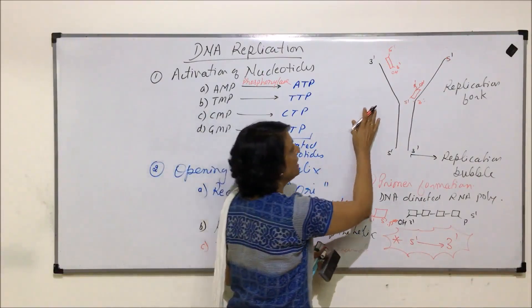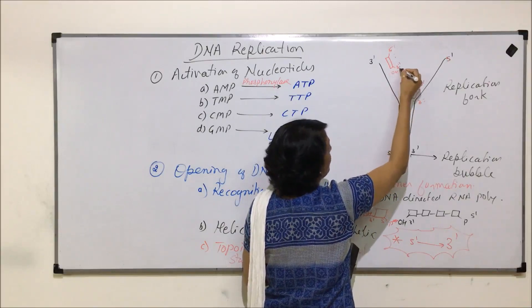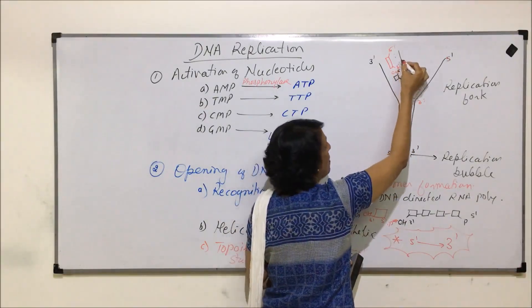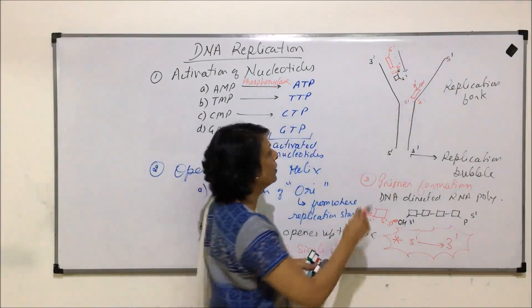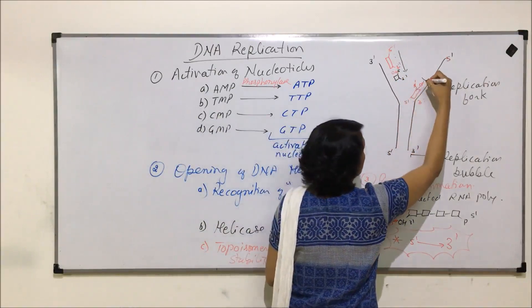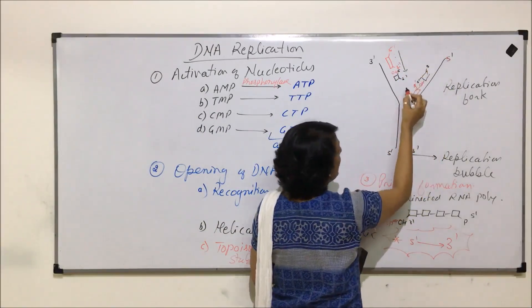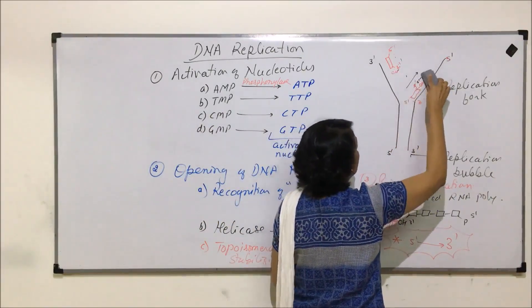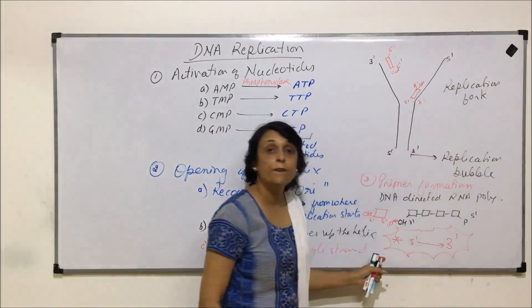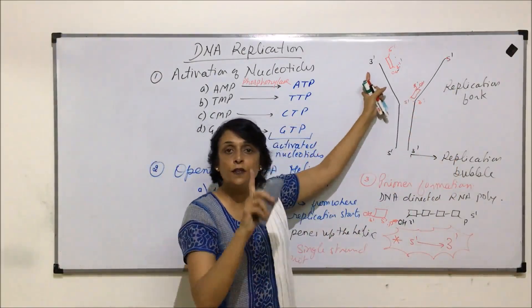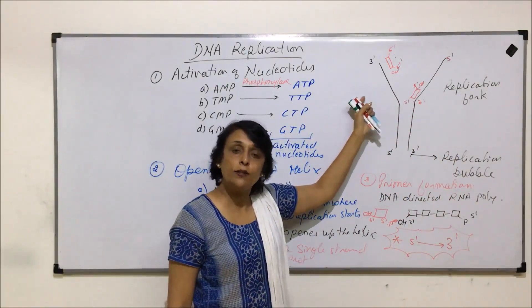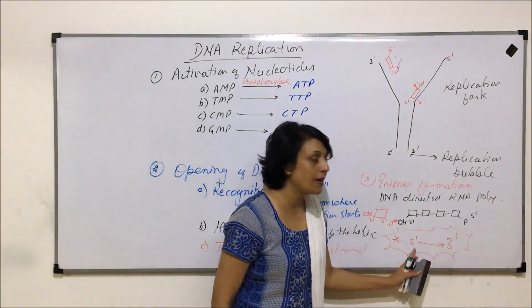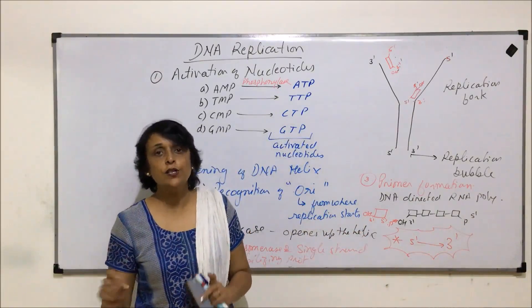To confirm: if the strand grows and a new nucleotide comes, the new end becomes 5 prime and the growing end is 3 prime — it is coming from 5 prime towards 3 prime. In the other case as well, a new nucleotide comes at the 3 prime end, and the strand again grows towards its 3 prime carbon. So the direction is always 5 prime to 3 prime.